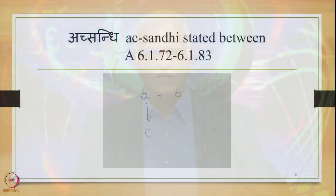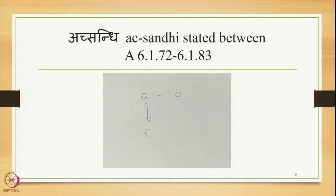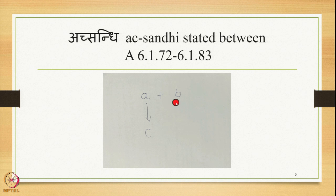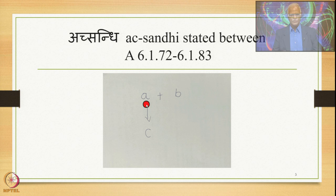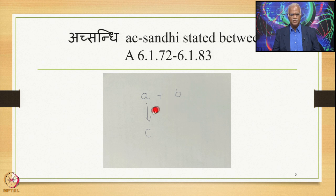Ekasthanika Ekadesha can be represented diagrammatically: if you have A in close proximity with B — meaning A plus B as input — B is the right-hand side environment in Samhita mode, and A gets substituted by C. So A plus B is the input and C plus B is the output. A is the substituent (Sthani), and C is the substitute (Aadesha).